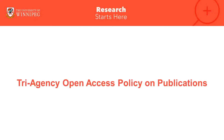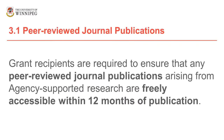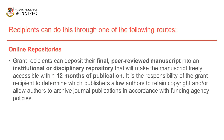This has most bearing when we talk about the tri-agency open access policy on publication. It specifically applies to peer-reviewed journal publications, and it says that grant recipients are required to ensure that any peer-reviewed journal publications arising from agency-supported research are freely accessible within 12 months of publication. It sets out two different ways you can do this. One option is an online repository — what I'm talking about when I talk about WinSpace. Grant recipients can deposit their final peer-reviewed manuscript into an institutional or disciplinary repository that makes it freely available within 12 months.